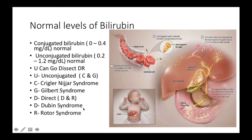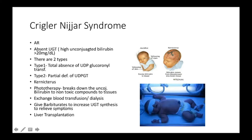What then is Crigler-Najjar syndrome? First of all, Crigler-Najjar syndrome is autosomal recessive, and it happens as a result of absent UGT. Here we have unconjugated bilirubin levels of more than 20 milligrams per deciliter. There are two types of Crigler-Najjar syndrome — Type 1 and Type 2 — with Type 1 being the total absence of UDP-glucuronosyltransferase (UGT), and Type 2 being a partial deficiency of UGT.